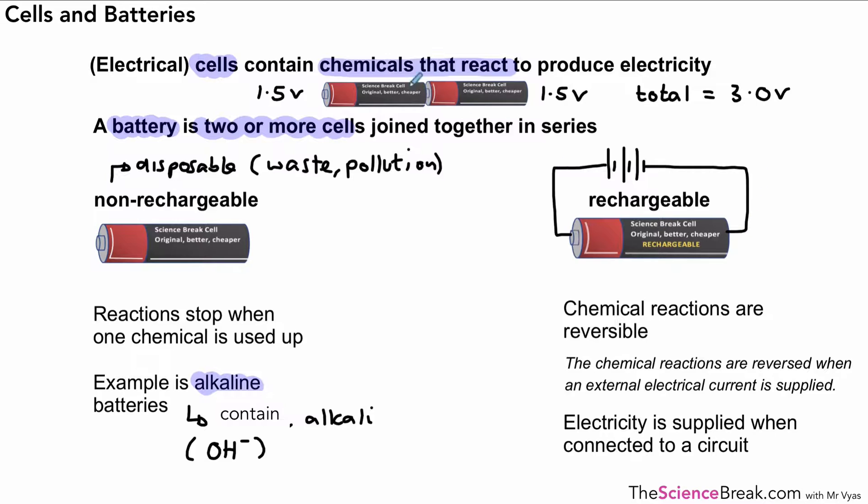We can do that by usually plugging it into the mains, which will provide a direct current. Or we could just show it in a diagram like this. This diagram is incorrect because the positive of the battery is on the wrong side, however you get the idea. So the chemical reactions are reversed when an external electrical current is supplied, and that allows the battery to be recharged. This will of course produce less waste and less pollution because they can be reused and not thrown away.